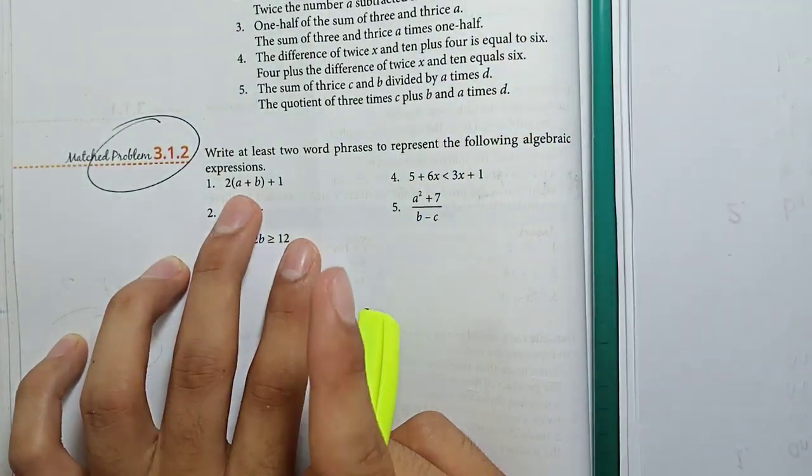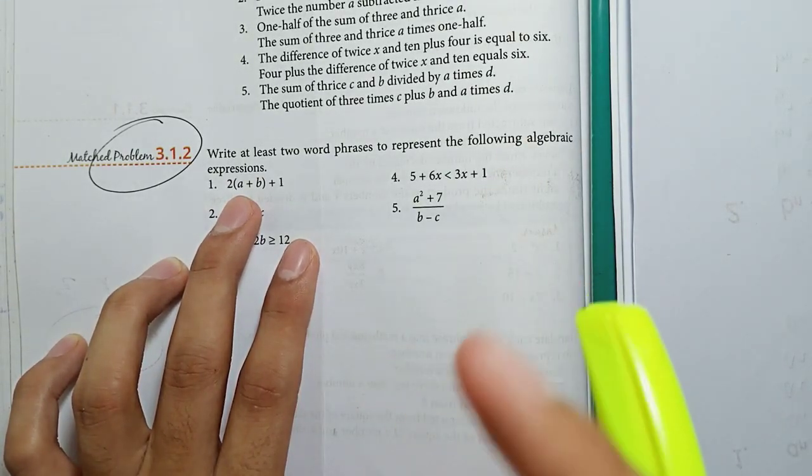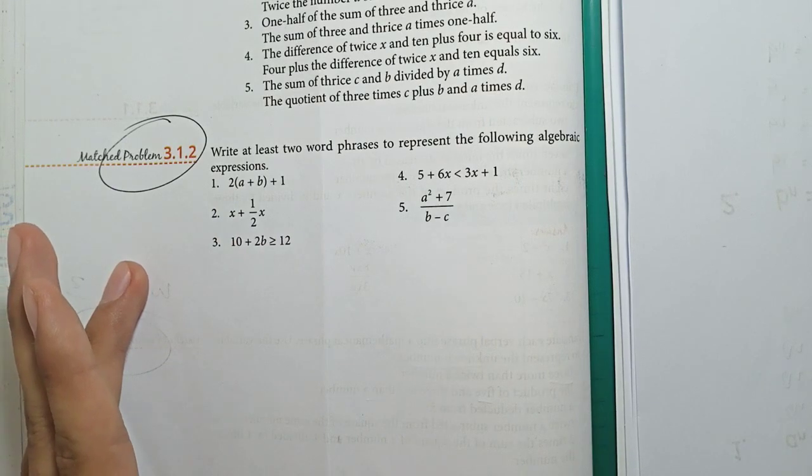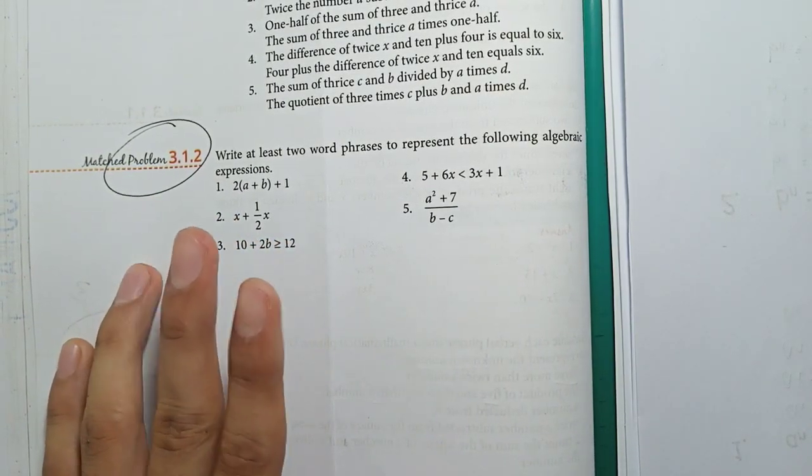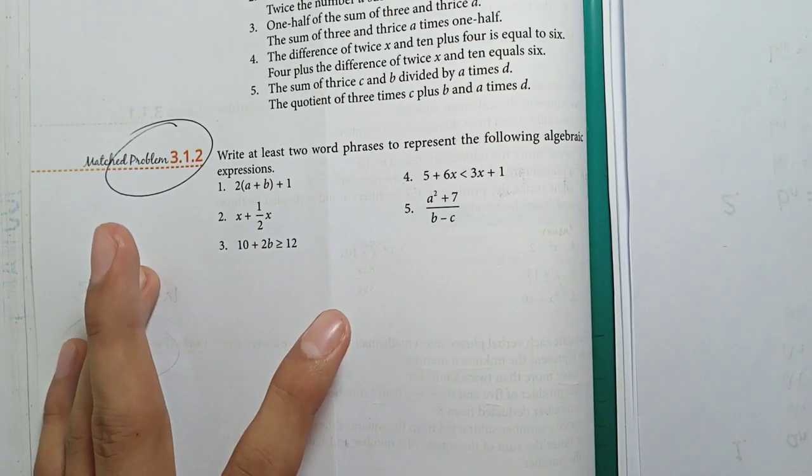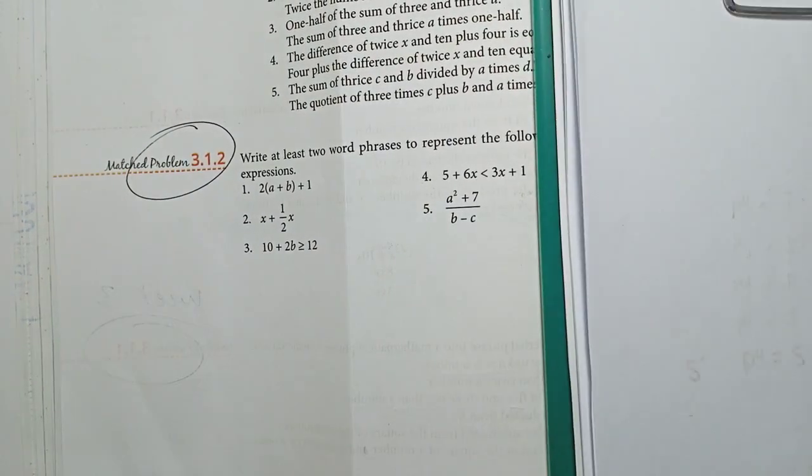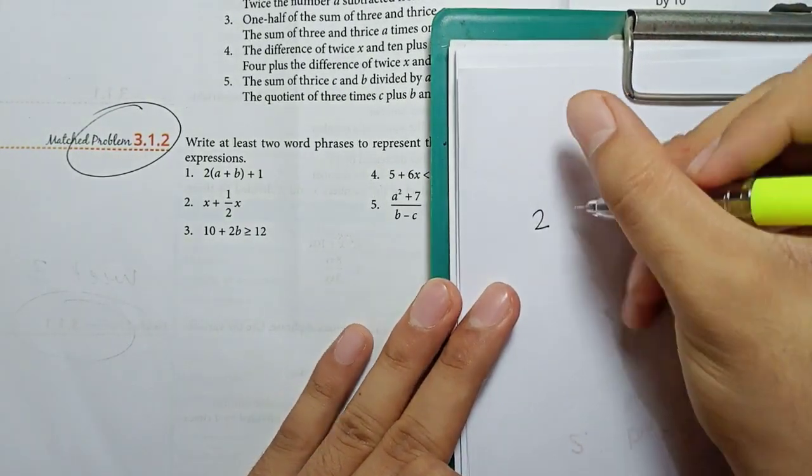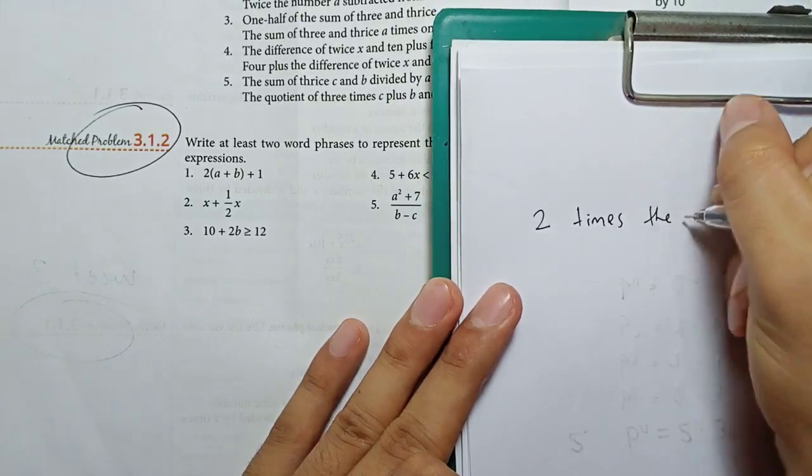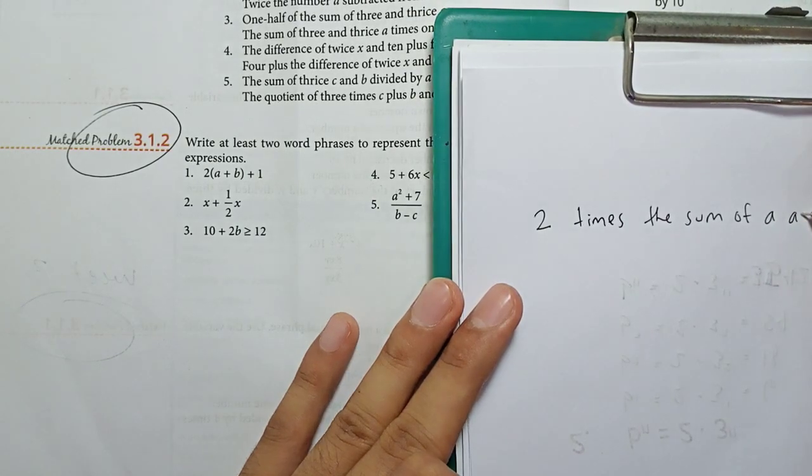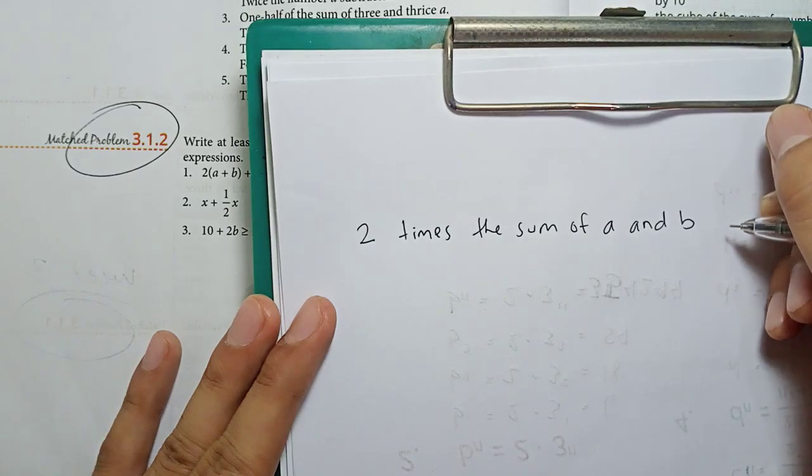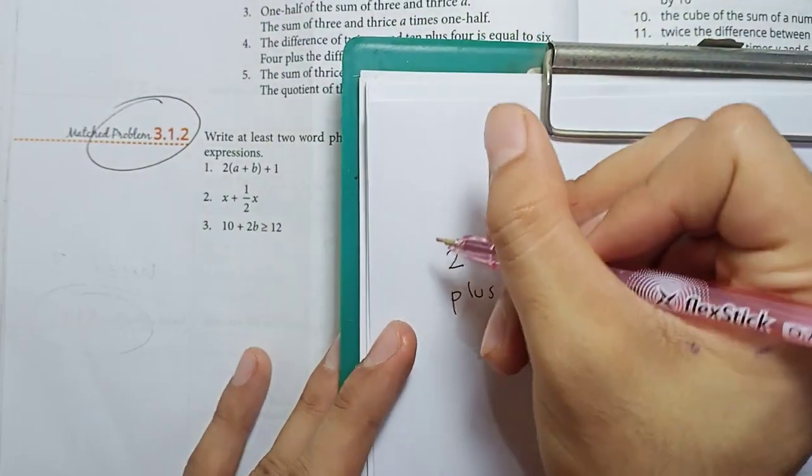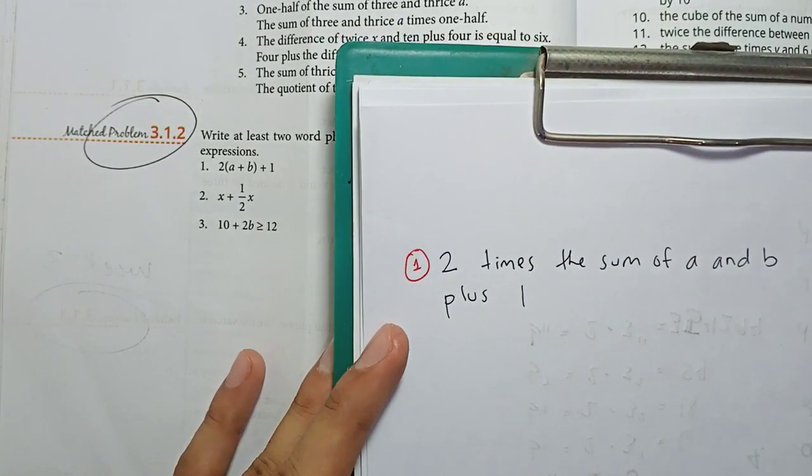Here, number 1, we have 2 times the quantity of A plus B plus 1. So here, ang tip ko lang dito ay basahin niya kung paano ba ito binabasa talaga. So kapag basa ko dito, 2 times the sum of A and B plus 1. Ganun lang, hindi susulat ko. 2, for number 1, 2 times the sum of A and B plus 1. So that's it. Now I already translate that into verbal phrase. Basahin lang, isulat.